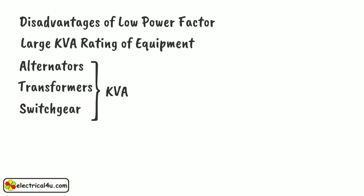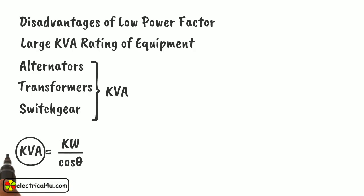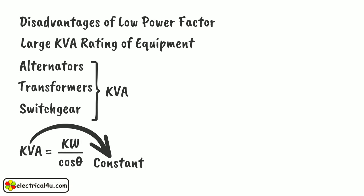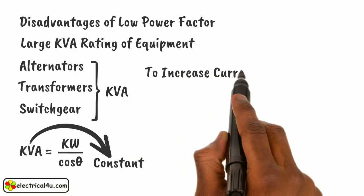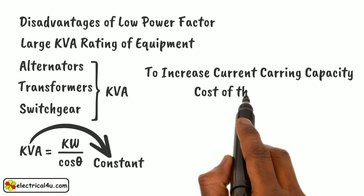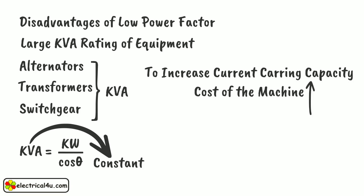The relation between KVA and KW is: KVA equals KW divided by cos θ. So, for getting desired output power in kilowatts from a machine, the KVA rating of the machine has to be high if the power factor is poor. As the system voltage is considered nearly constant, the current carrying capacity of the machine is increased to meet the desired power output at low power factor. To increase the current carrying capacity, the cross section of the conducting parts must be made larger, which makes the machine heavier, larger, and more expensive. If there is a restriction on increasing the size, superior conductive materials are used, which also increases the cost of the machines.